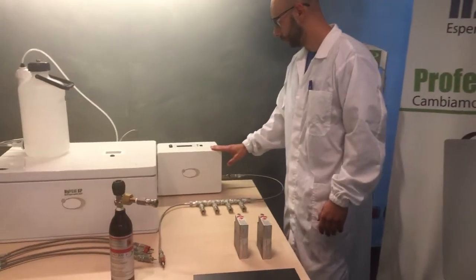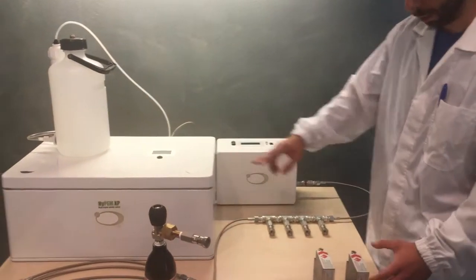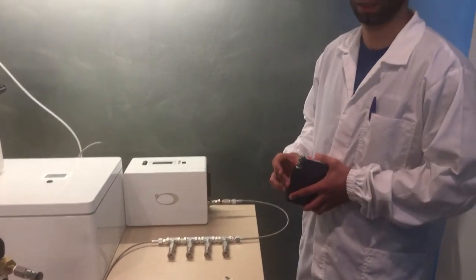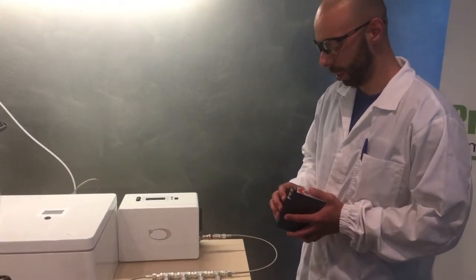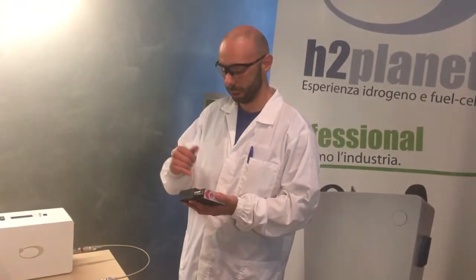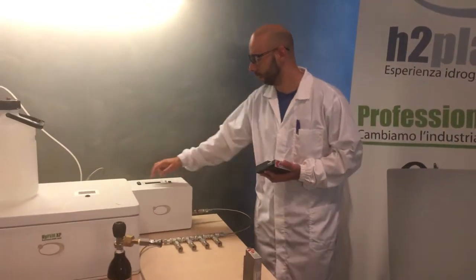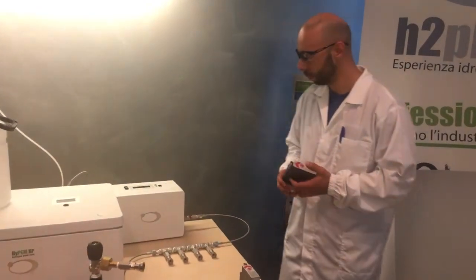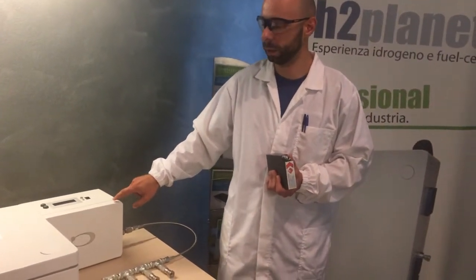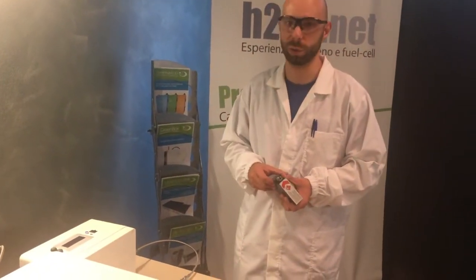Basically the system is connected between the electrolyzer and the cartridge, and the system checks the pressure inside the cartridge. When the pressure goes down below a certain pressure limit defined by the user with those buttons, the system sends a command to the electrolyzer in order to start the charging process.